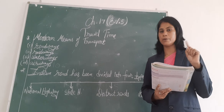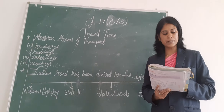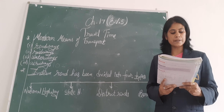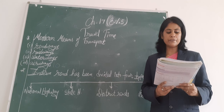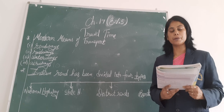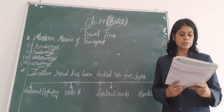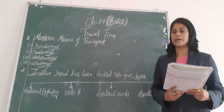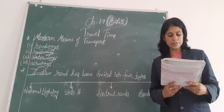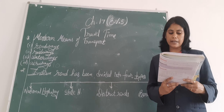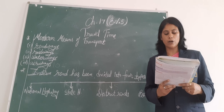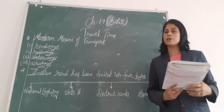On side two, a picture of national importance is printed at the center of the bank note. For example, the 50 rupee note has a picture of the Parliament House. The 500 rupee note has a picture of Mahatma Gandhi going on the Dandi March. The 10 rupee note has pictures of a tiger, an elephant, and a one-horned rhinoceros.